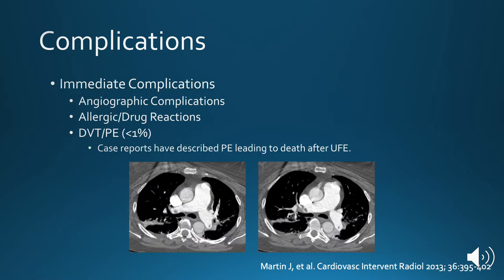Some of the immediate complications occurring after fibroid embolization include angiographic complications and allergic and drug reactions. It's important to remember that this is an angiogram, so the complications that we can see — including hematomas, distal embolization, or other arterial complications — can still occur after this procedure. The good thing is that most of these patients are in their 40s, and their arteries tend to be healthy, and the risk of these complications is low. Venous thromboembolic disease has also been reported after the procedure. Fortunately, this is rare, but case reports have been described with PEs leading to death after fibroid embolization.